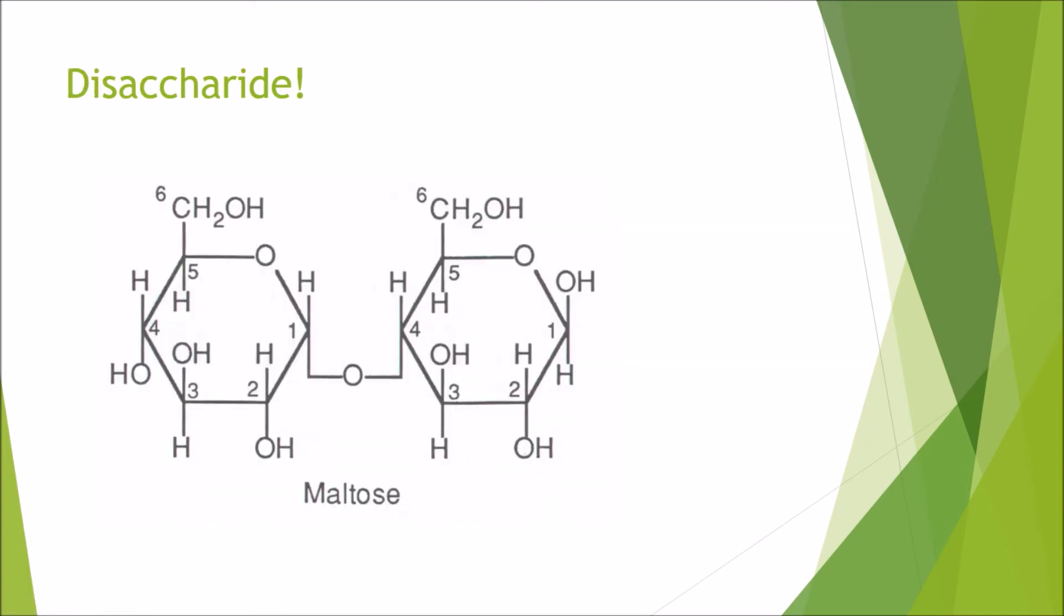Now we're going on to disaccharides. This here is maltose, which is a combination of two glucose molecules together by a glycosidic bond. This here is the glycosidic bond. This is where you would see the two OH molecules. Then it's a condensation reaction, H2O given off, giving us this glycosidic bond.